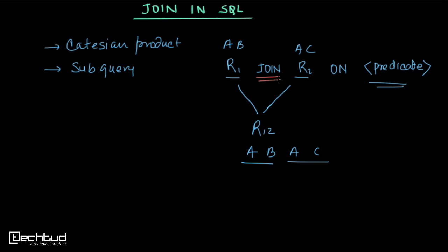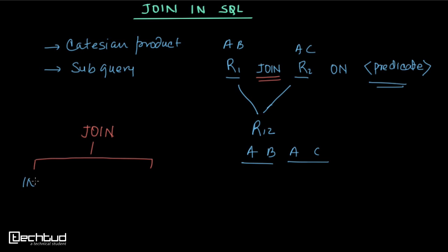In this join we can write different kinds of joins. Depending upon the requirement we choose what kind of join we want. We have two main types: inner join and outer join.